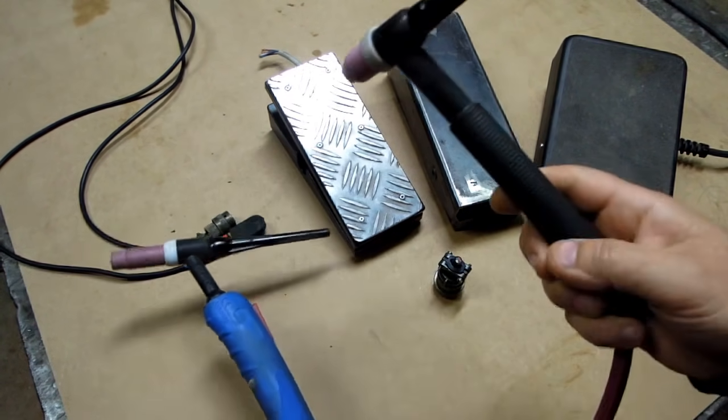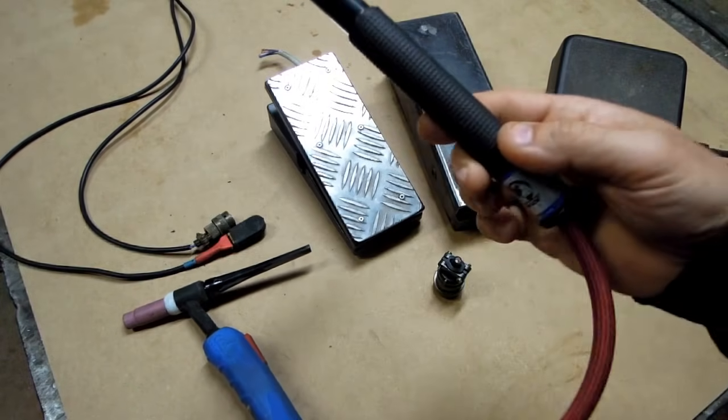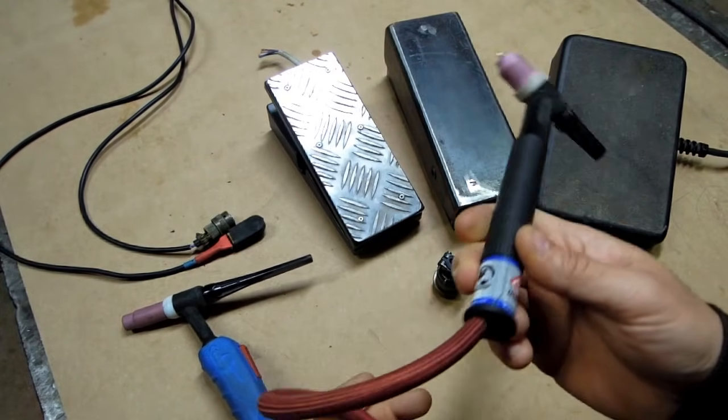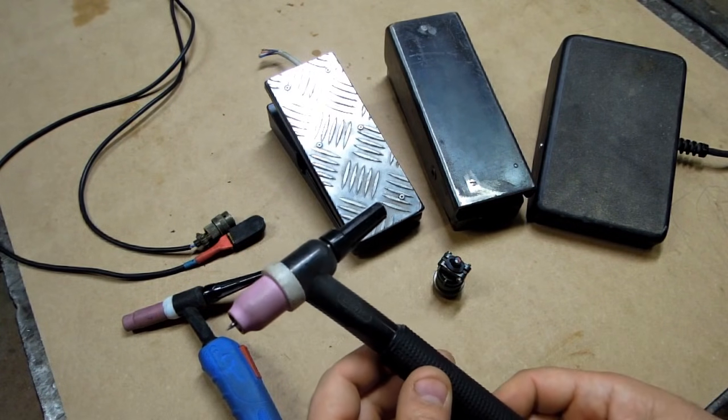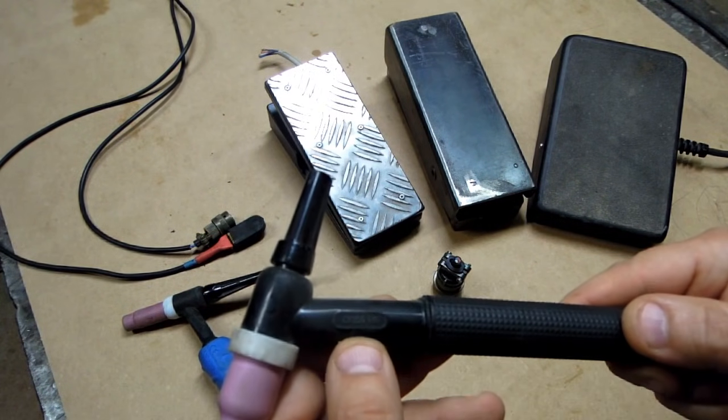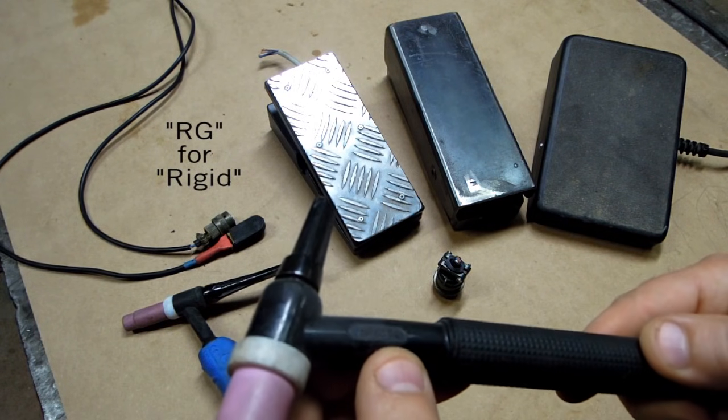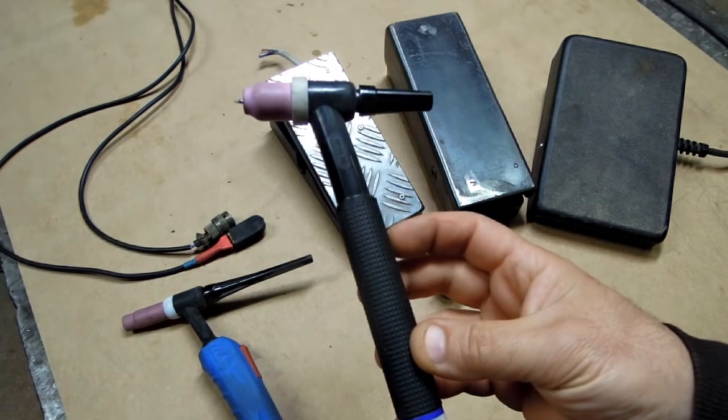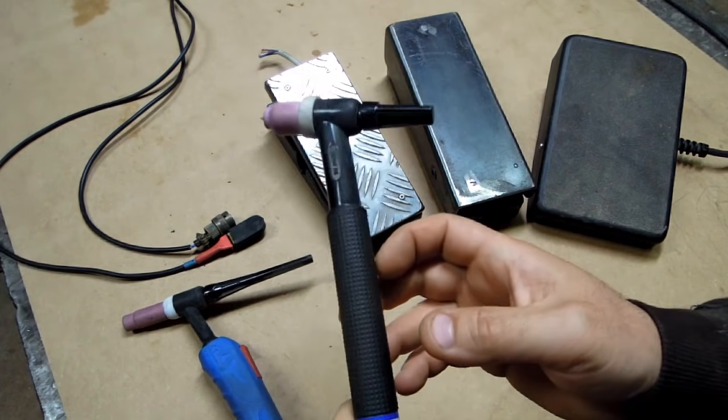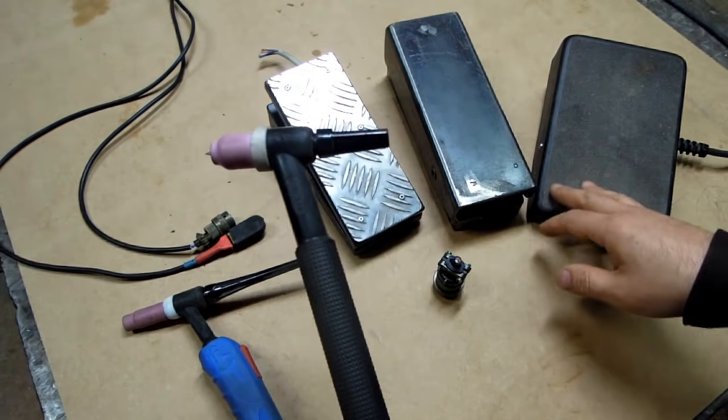I have a few torches, but the one that gets the most use is the CK worldwide with the flex cable. I'm not sure what number this is, but this is also a number 17 and there it is CK 150. The torch has no controls on it just because I've slowly moved over to exclusively working with a foot controller.